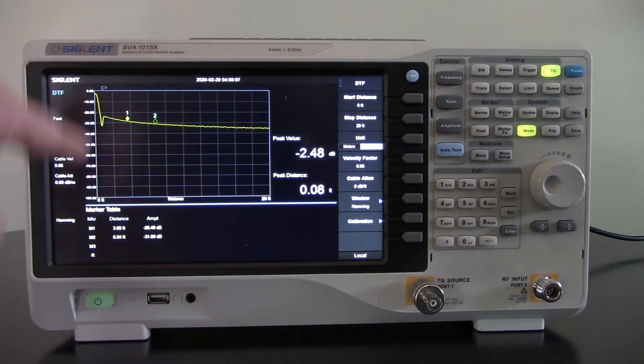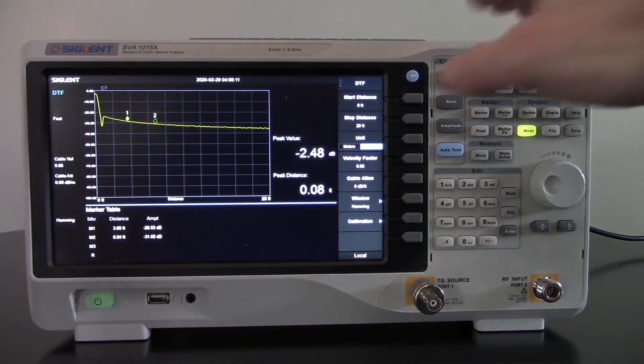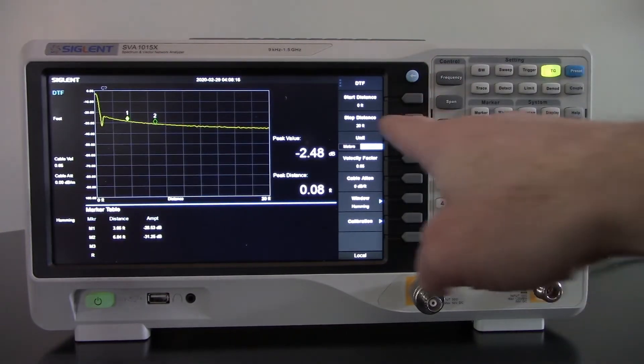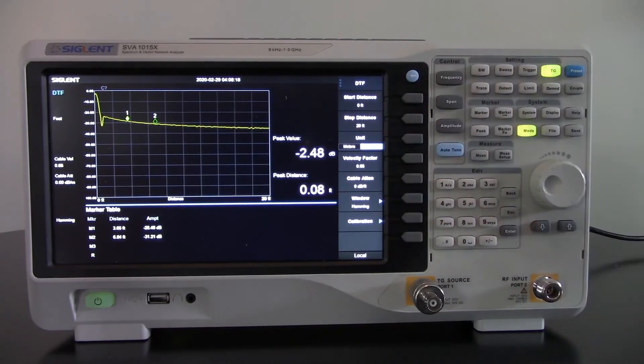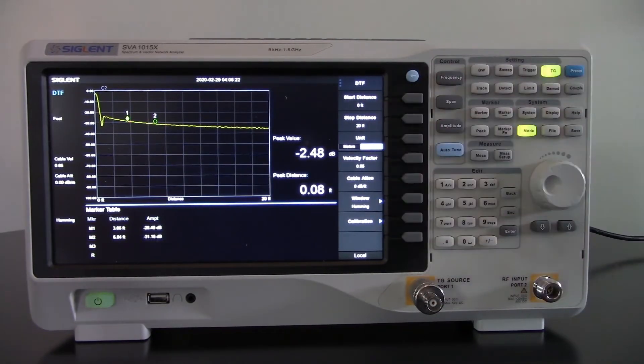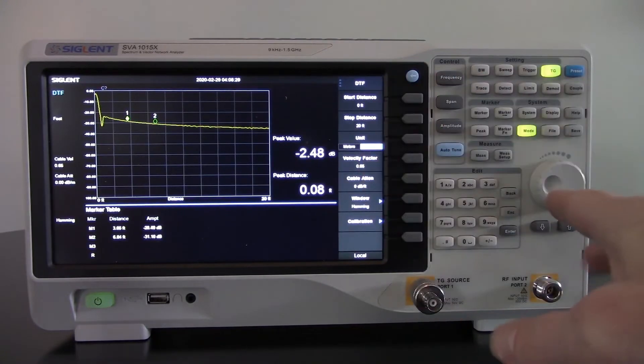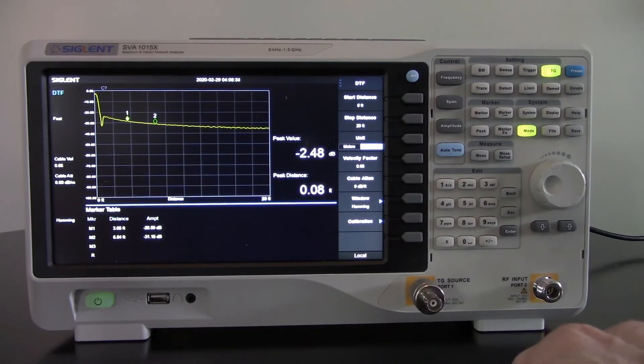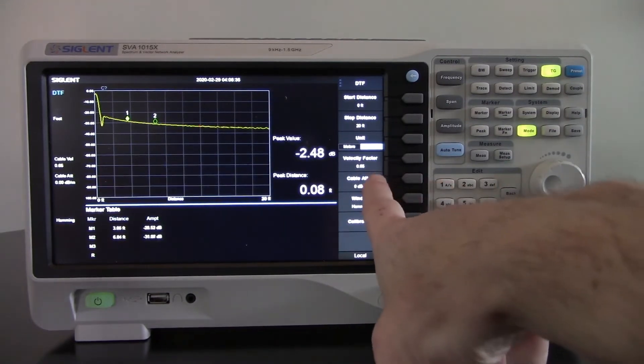Here we've got the display. We're just showing the amplitude return versus the distance out. Here you can see we can change the start and stop distance. Since I know this is only going to be about 10 feet of total cable length, I'm going to set my stop distance to 20 feet. I want to look at units of feet. My velocity factor is 0.66. You want to key that in for the specific cable type that you have if you know it. 0.66 is fairly common, but more accuracy is going to be achieved if you enter the correct values for your specific cable type.